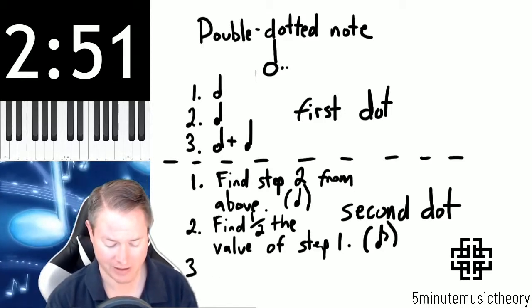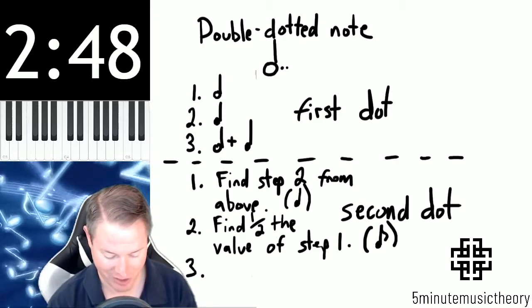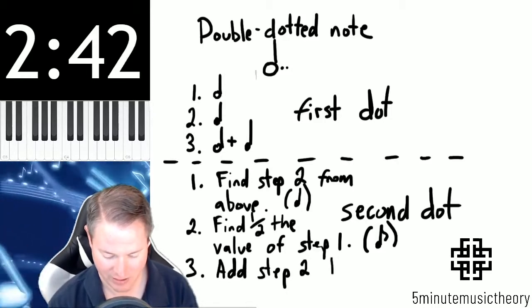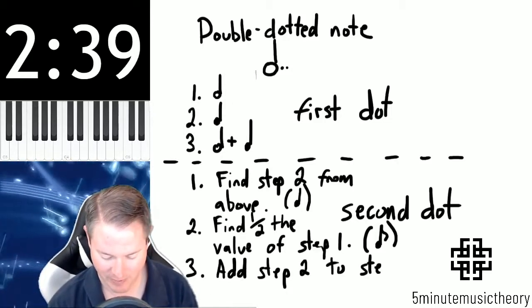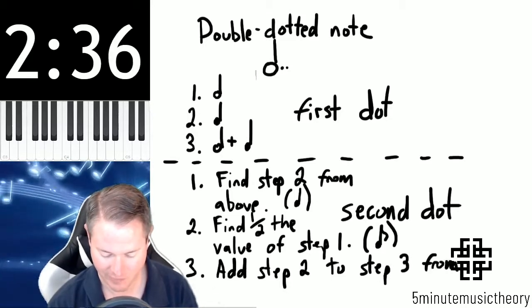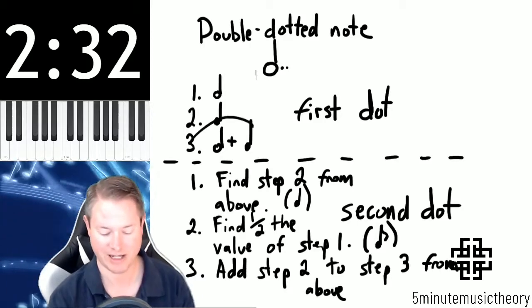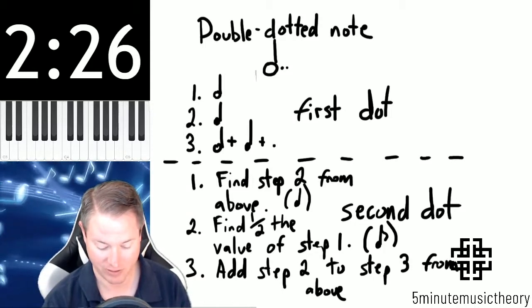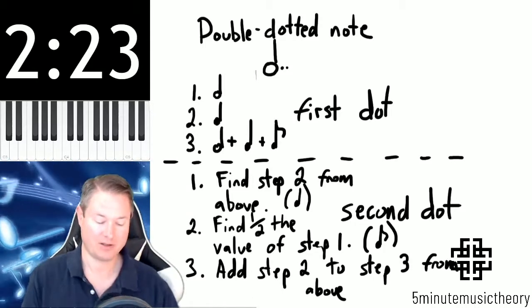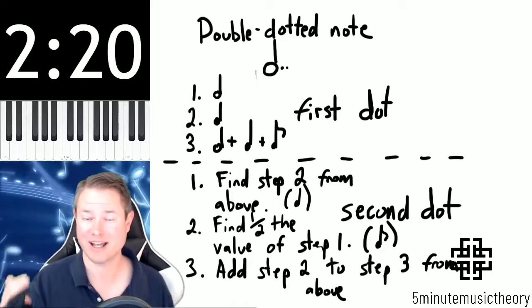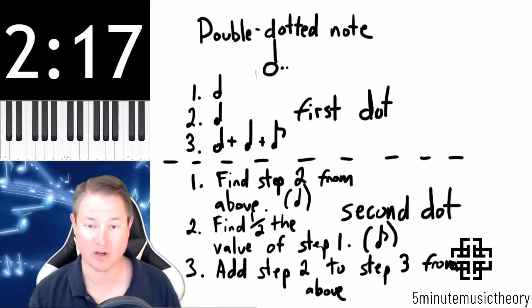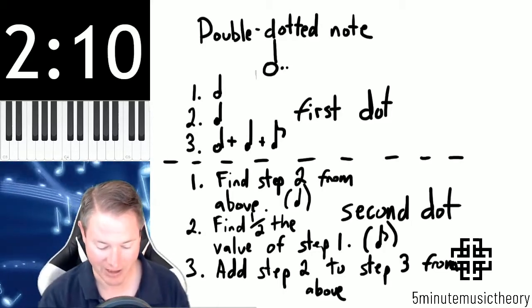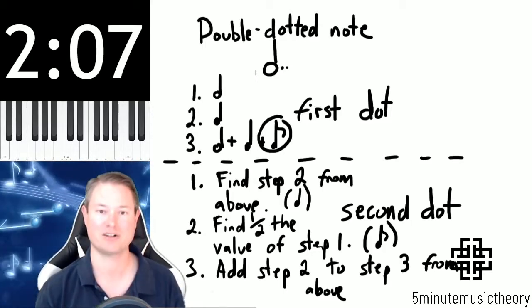And then the last step is we take step two and add that. Add step two to step three from above. So what we're doing is we're taking step three, which was a half note plus a quarter note, and then we're adding an eighth note to that. The concept is once you put a dot on a note, you're slicing half the value off of the original note and adding it to that original note, just like we did with the half plus the quarter. And then we take the eighth and add that. That's the double dotted. So once we add that second dot, we have this extra eighth note.